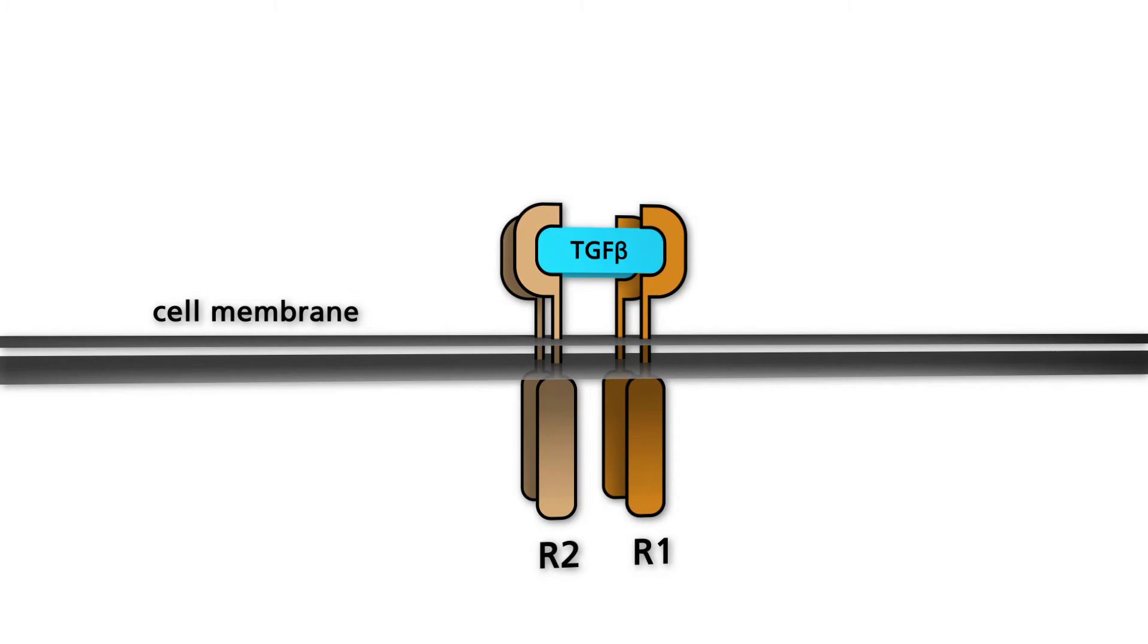After TGF beta binds to the ectodomains of the two receptor pairs, a stable receptor complex is formed, allowing the type 2 receptor kinase to phosphorylate the cytoplasmic domain of the type 1 receptor.